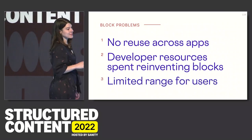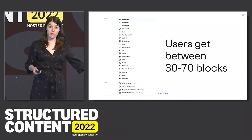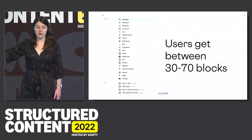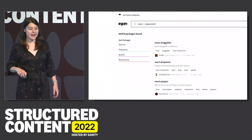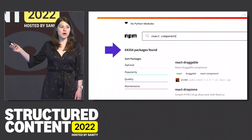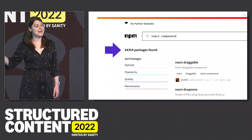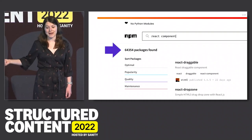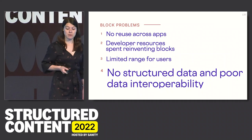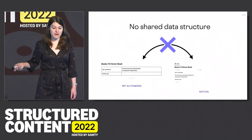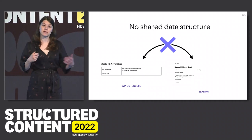The next issue is that users only get access to a very limited range of blocks — between 30 to 70 in most apps. If you compare this to what a React developer has on NPM, there are over 64,000 packages to pick from — an enormous discrepancy in the choice and power that developers have versus users. And lastly, the biggest one: there's no structured data and very poor interoperability between blocks. A table in WordPress Gutenberg and a table in Notion have essentially the same data structure, but they can't share it because they're built differently on the back end and simply not designed to be shareable.